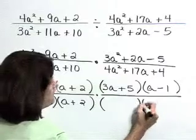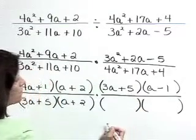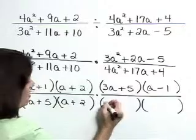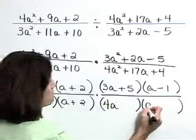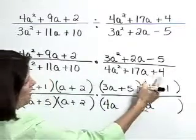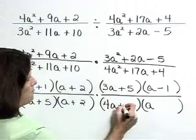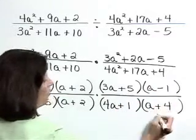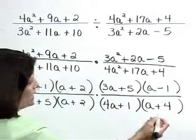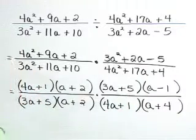To the denominator, factors of 4a squared are 4a and a. Factors of positive 4 are a plus 1 and a plus 4, and let's check. 1a plus 16a gives that 17a.